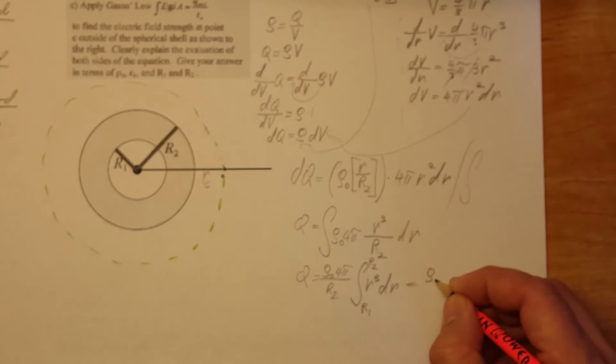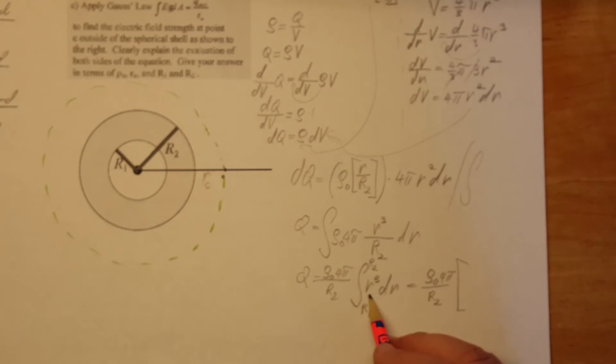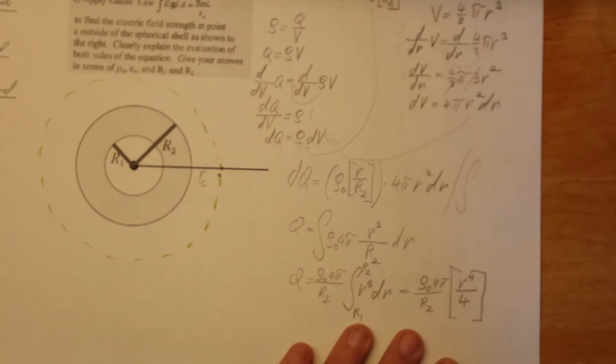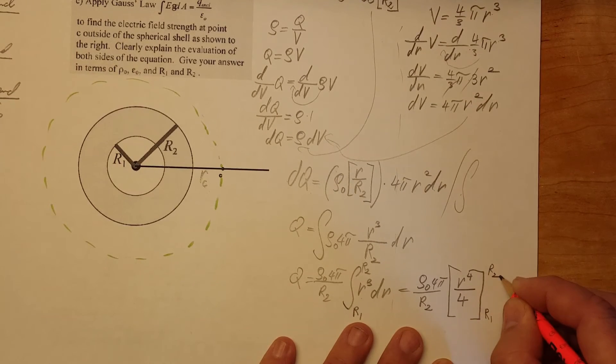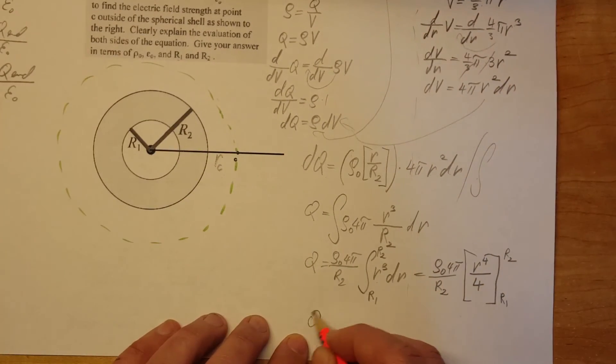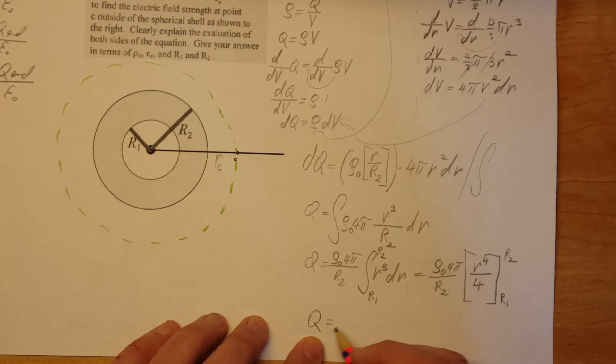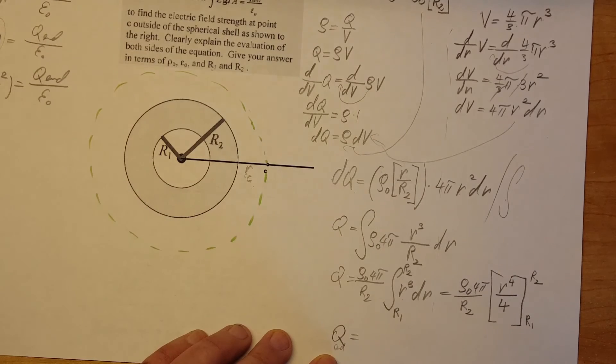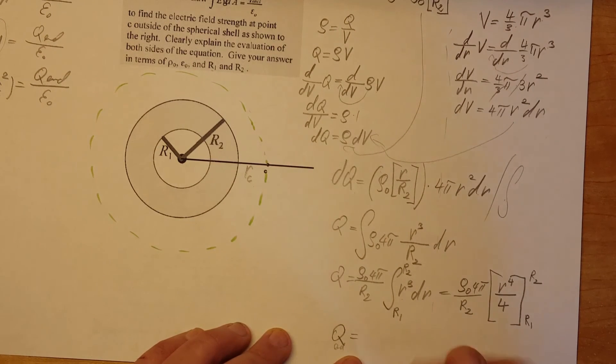Now we're going to solve. In the front Rho 0, 4 pi over big R2. That doesn't change. Integral of R cubed is R to the 4th divided by 4. And our limits of integration are R1 to R2. Now we're going to have our final form for our Q which will be our Q enclosed. So Q. The front stays. R to the 4th we can simplify out. Rho 0 pi over R2 and R2 to the 4th minus R1 to the 4th. And this is our Q.